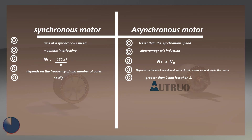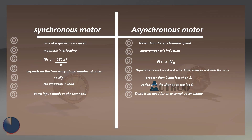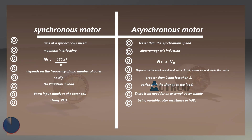Regarding the effect of load on speed: the speed of the synchronous motor does not vary with the variation in load. For an asynchronous motor, the speed varies with the change in load. For rotor supply, the rotor of the synchronous motor requires an extra input supply to produce the rotor magnetic field. In the case of an asynchronous motor, if the rotor is squirrel cage type, then there is no need for rotor supply, but the wound type rotor needs extra supply input. For speed control, the speed of the synchronous motor is controlled by changing the supply frequency using VFDs. The speed of an asynchronous motor can be controlled either by using variable rotor resistance or VFD.